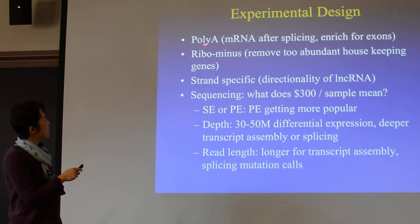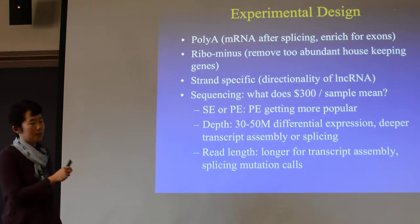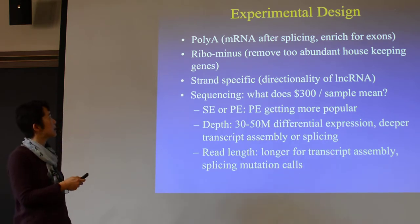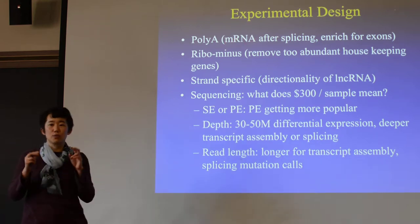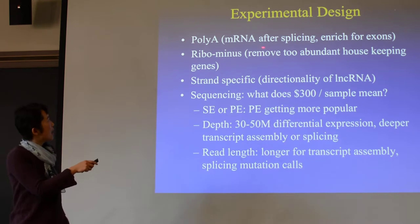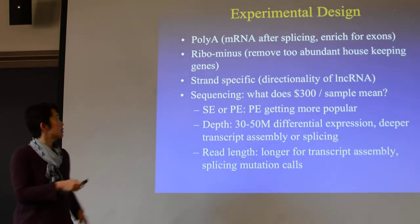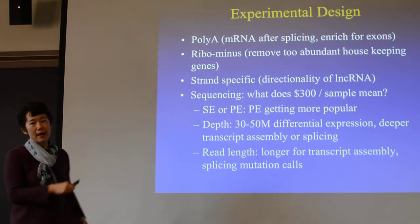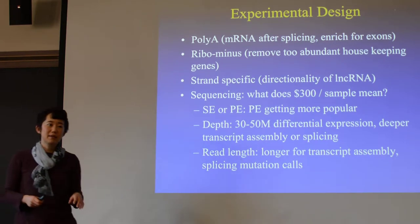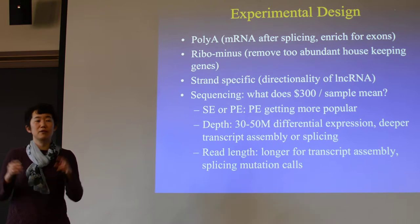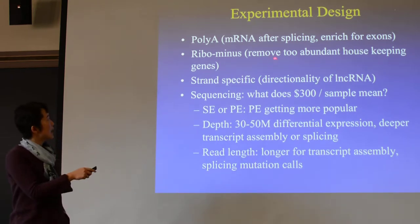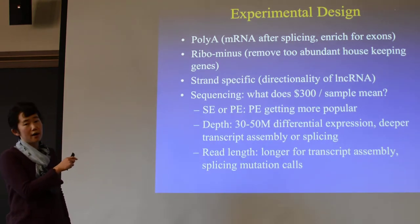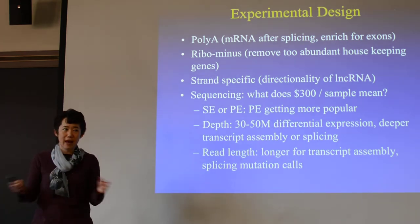There is poly-A selection: using poly-T to reach for the poly-A transcript, so you get the mature transcript. Poly-A is only added after splicing, and you can reach for exons. There is also another way called ribominus — you just remove the ribosome RNA. Sometimes introns are still present, and non-coding RNAs that may or may not have a poly-A tail will also be enriched. You just remove the really housekeeping ribosomal RNA; the rest — all the genes, pre-spliced, everything — is there.